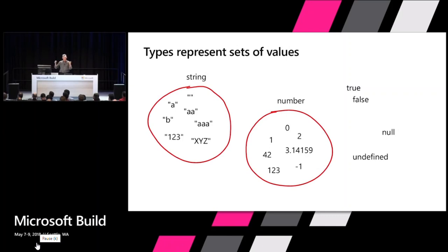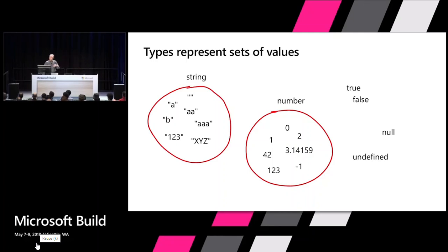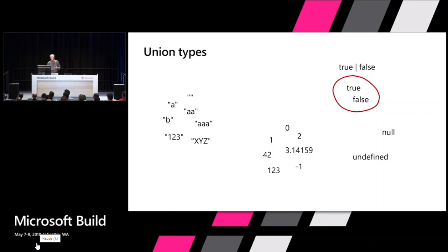The string type is actually all unit types that are strings, and the number category is all unit types that are numbers. Then we have type constructors that allow you to make more complex types — for example, true or false is exactly the same as the built-in boolean type. It has two possible values and it's a union of either true or false. That's sort of how everything builds up.